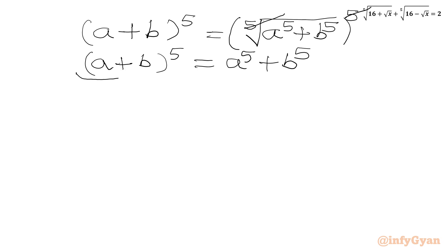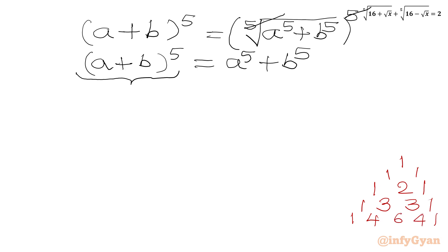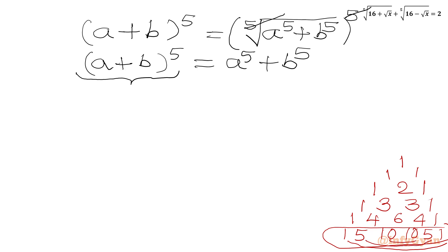Now I will use binomial expansion and Pascal's triangle to write the expansion of (a plus b)⁵. From Pascal's triangle: for power 2 coefficients are 1, 2, 1; for power 3: 1, 3, 3, 1; for power 4: 1, 4, 6, 4, 1; and for power 5: 1, 5, 10, 10, 5, 1. Grouping symmetric terms, I write a⁵ plus b⁵ plus 5ab(a³ plus b³) plus 10a²b²(a plus b).